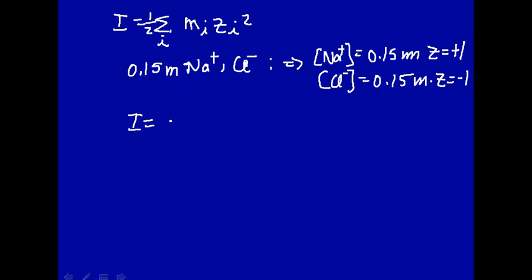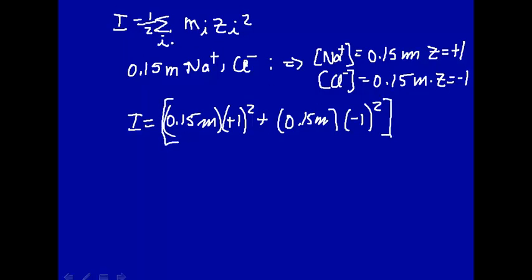So we have this information, we're ready to calculate the ionic strength. Ionic strength will be the sum of all the ions. Let's do sodium first: its concentration is 0.15 molal, its charge is plus 1, and we're going to square that. And then the chloride, that's the second ion in solution, 0.15 molal, and its charge is minus 1, but we're going to square that. And this whole thing, we take half of that. So the ionic strength of something that dissociates into just single positive, single negative species is just 0.15 molal.